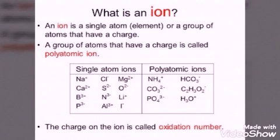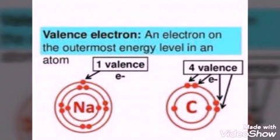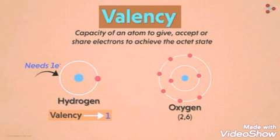To write a chemical formula we need symbol of the element and valency of the ion which can be monoatomic or polyatomic ion. Each atom has electrons revolving around the nucleus in orbits or shells. The electron that is present in the outermost shell is called as valence electron. This valence electron is involved in the formation of a molecule or a compound.